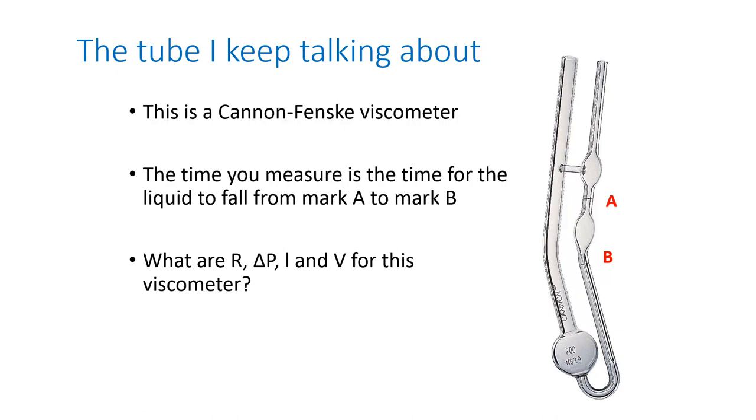So the time in that previous equation is the time that it takes for the liquid to fall through the tube from mark A to mark B, from the upper to the lower mark. So if we want to use that equation, we then need to know R, delta P, L, and V for this viscometer.